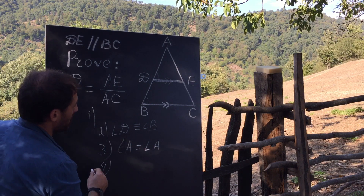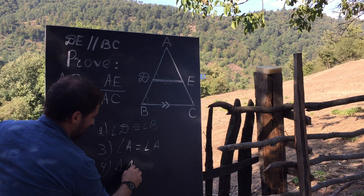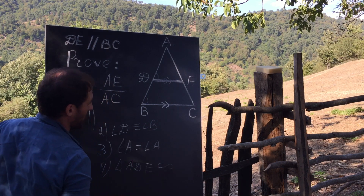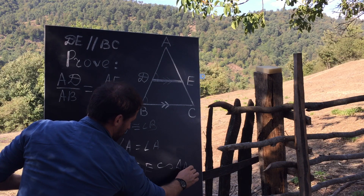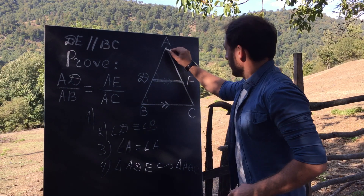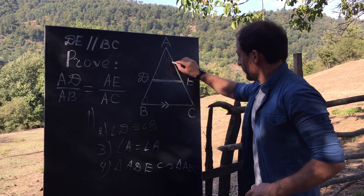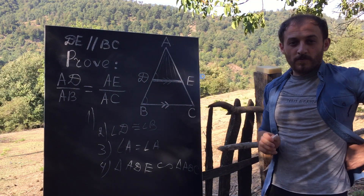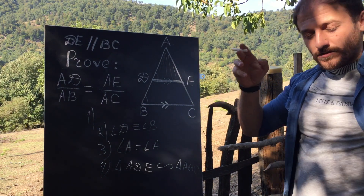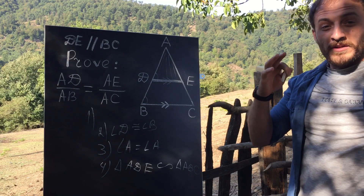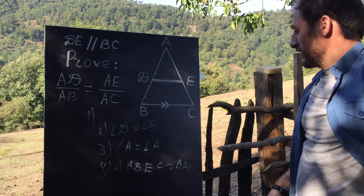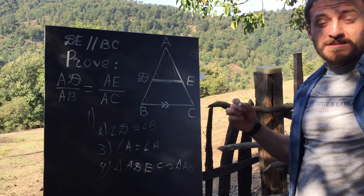Step 4: Triangle ADE is similar to triangle ABC. Why? Because if two angles of one triangle are congruent to two angles of another triangle, then the two triangles are similar — AA similarity.